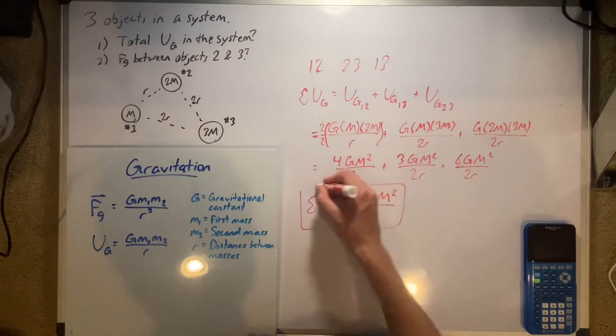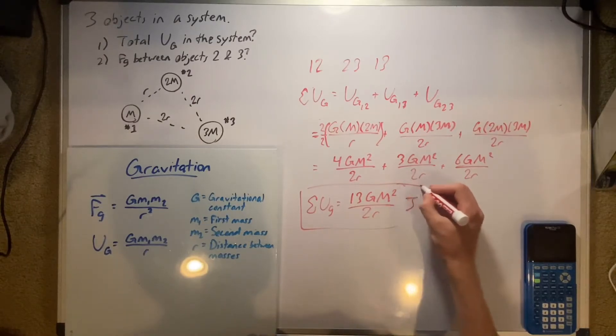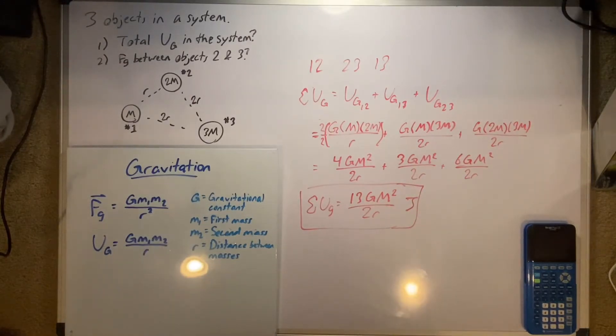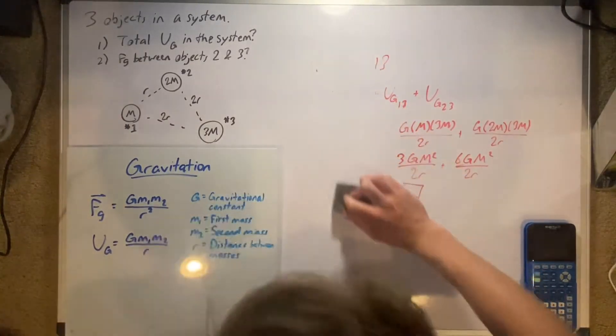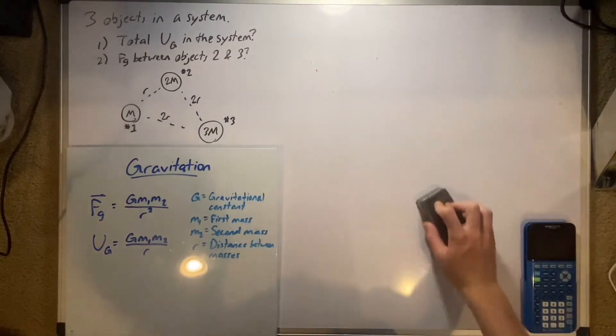And that is the answer, except if we wanted to do units, we would say it is in joules. And that's the answer to the total UG in the system. So now, if we erase this, we can now do number two.